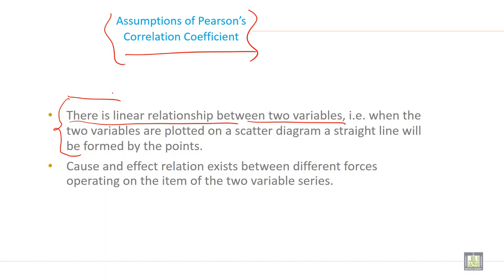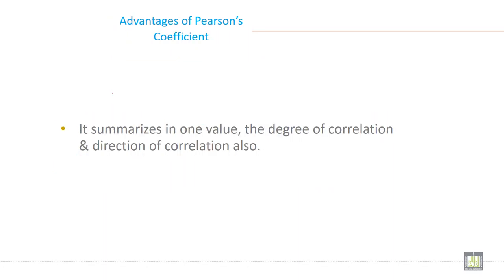What are the advantages of Pearson's coefficient of correlation? It summarizes in one value - this is the biggest advantage. The relationship will be summarized in a single value: the degree of correlation and the direction of correlation also.